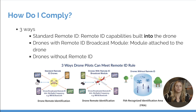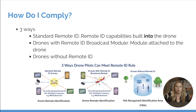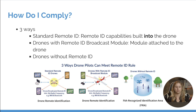The FAA has come up with a few different ways that we can comply with this new regulation. The first one being standard remote ID, where the remote ID capabilities are already built into the drone. Then we have drones with remote ID broadcast modules — a module that you attach to your drone to give it these capabilities. And then we simply have drones without remote ID. The standard remote ID and drones with broadcast modules are able to broadcast information via radio frequency, whether that be Wi-Fi or Bluetooth.